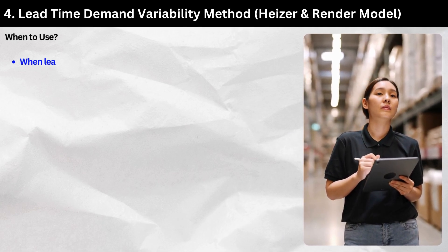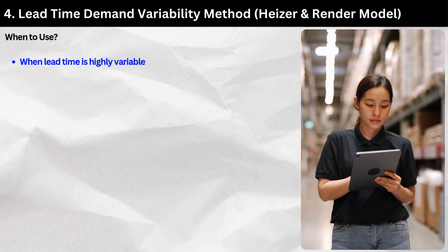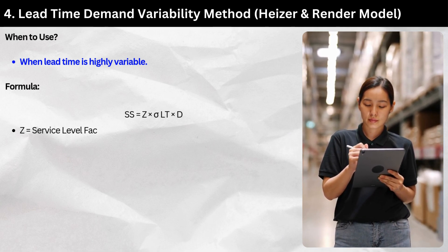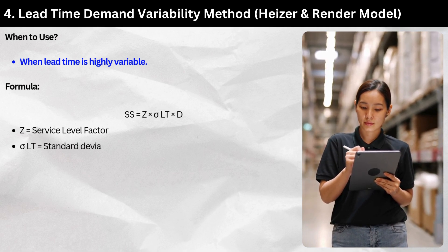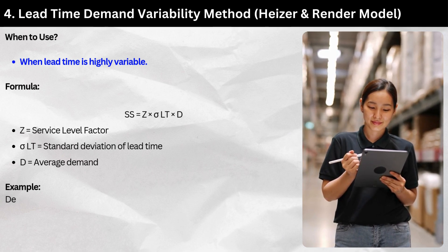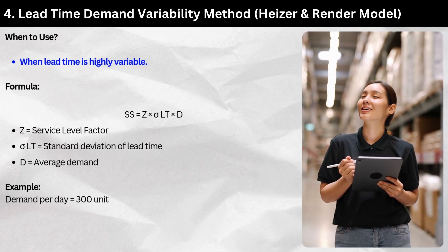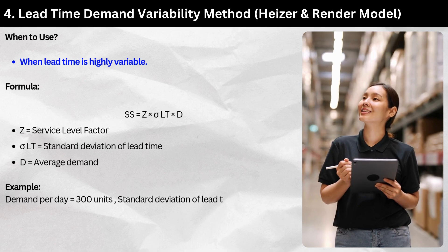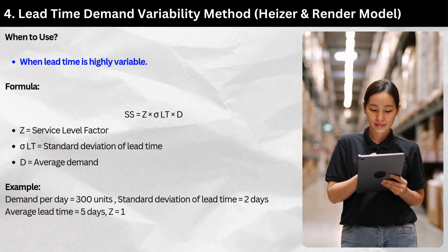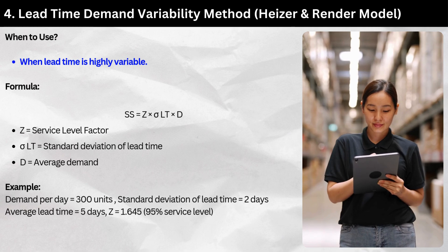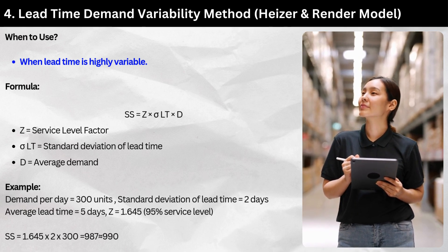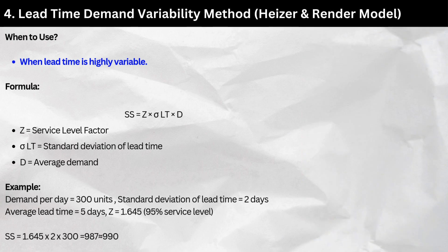Method 4: Lead time demand variability method — Heizer and Render model. When to use: when lead time is highly variable. Formula: SS = Z × σLT × D, where Z = service level factor, σLT = standard deviation of lead time, D = average demand. Example: Demand per day = 300 units, σLT = 2 days, average lead time = 5 days, Z = 1.645 (95% service level). SS = 1.645 × 2 × 300 ≈ 990 units.